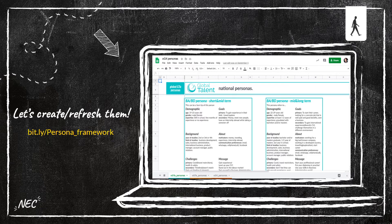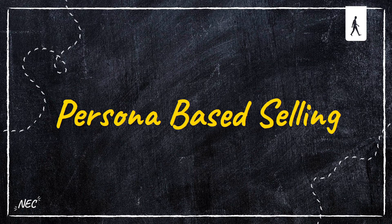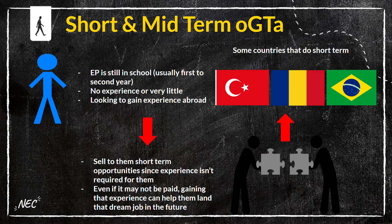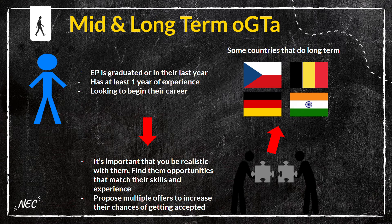For OGTA, we have personas for BA/BT, Marketing, and IT, while for Teaching we have personas for someone looking for a long-term or short-term opportunity. Now, for the short and mid-term OGTA persona: this is an EP who's still in school, usually first or second year, with no or very little experience, looking to gain experience abroad. It's very important to sell them short-term opportunities since experience isn't required. Even if it may not be paid, gaining that experience can help them land their dream job in the future. Countries that offer short-term include Turkey, Romania, and Brazil.